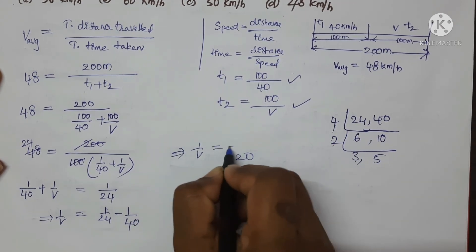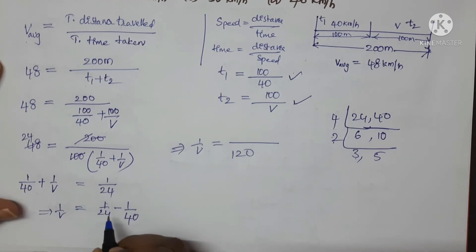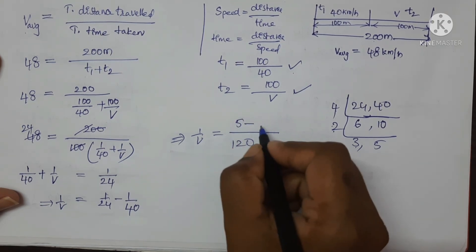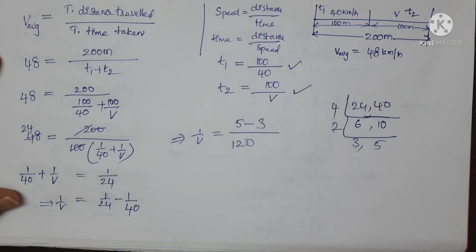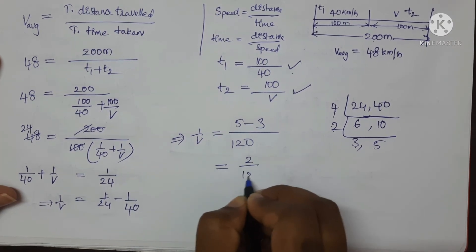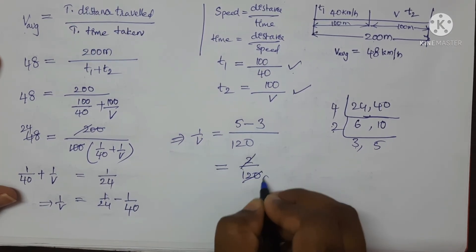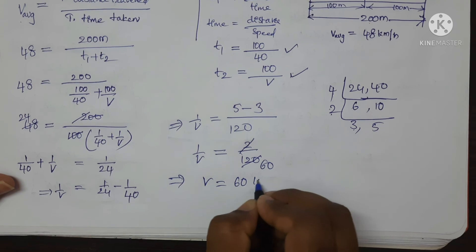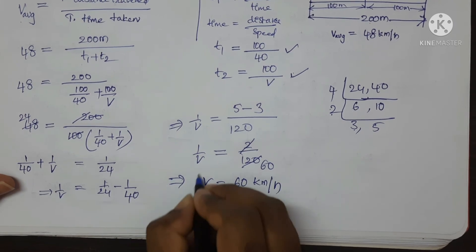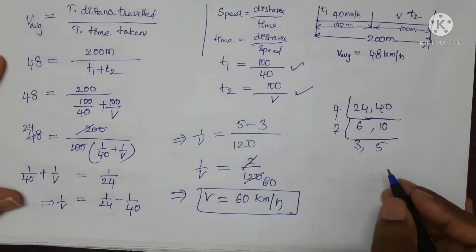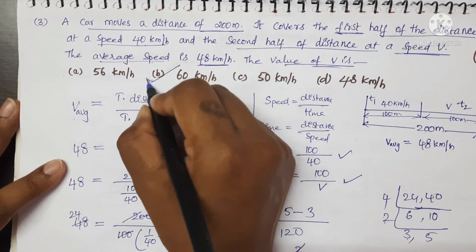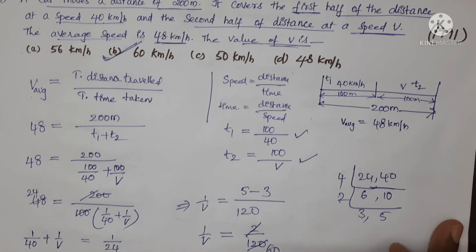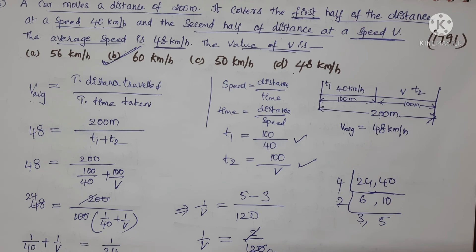So 1/v = 5/120 − 3/120 = 2/120 = 1/60. Therefore v = 60 km/h. We got the value of v as 60 km/h, so option V (60 km/h) is the correct answer. Like this we solve problems based on average speed and average velocity.